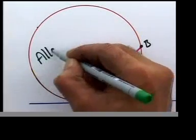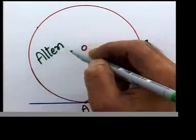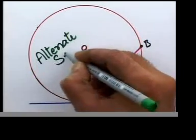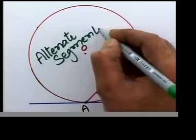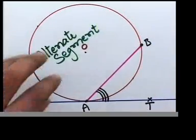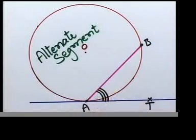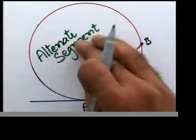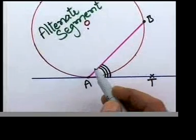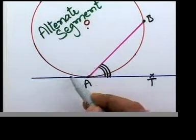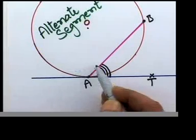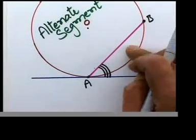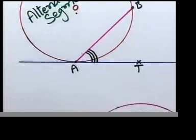Make a note in your worksheets: that's the alternate segment. This is the alternate segment of that angle. If you consider this side angle, that's the alternate segment. If you consider the other angle, we'll do that in the next example. That small part here is the alternate segment for that angle.